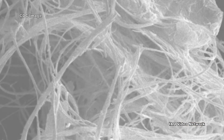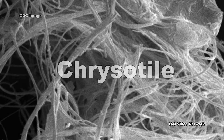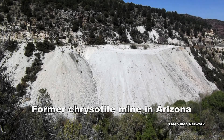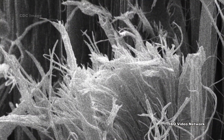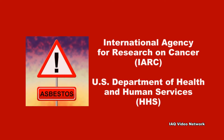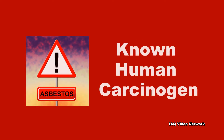According to OSHA, approximately 95% of the asbestos encountered by abatement workers in the United States is chrysotile. Also known as white asbestos or serpentine asbestos, chrysotile was extensively mined in the past from a number of locations across the country. While some consider exposure to other forms of asbestos to be more dangerous than chrysotile, the International Agency for Research on Cancer and the U.S. Department of Health and Human Services have classified chrysotile, along with the other forms of asbestos, as a known human carcinogen.